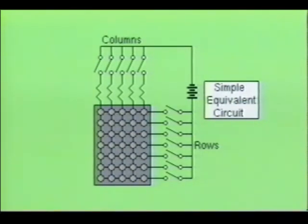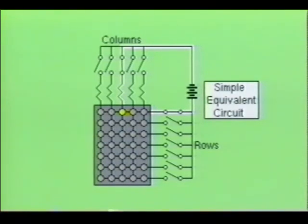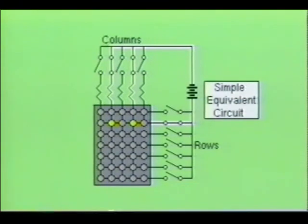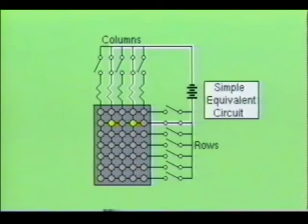In our example, we will illustrate the uppercase letter A. When the character generator scans the first row, the LED in column 3 will be high. Therefore, the LED in column 3, row 1, will be energized. Next, the character generator will scan row 2. As row 2 is being scanned, inputs on column 2 and column 4 will be brought high. This allows the LEDs in column 2 and 4, row 2, to become energized.